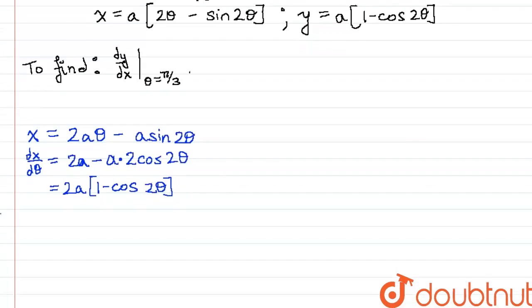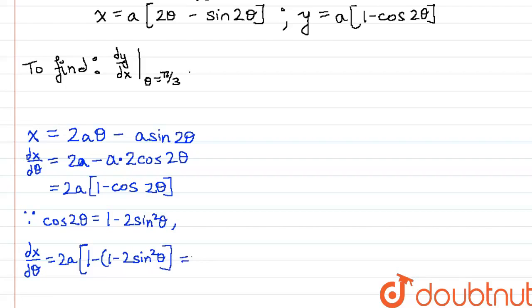Since cos 2θ = 1 - 2sin²θ, we can write dx/dθ = 2A(1 - (1 - 2sin²θ)) = 2A(2sin²θ) = 4A sin²θ.